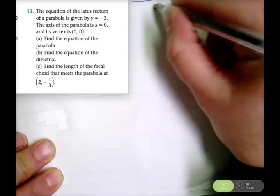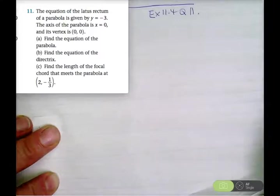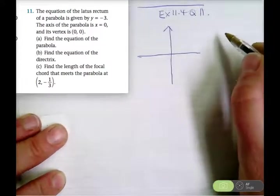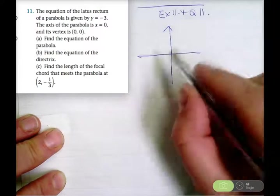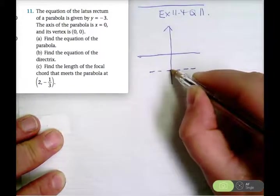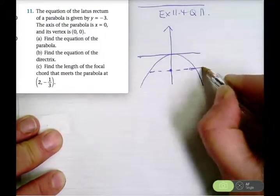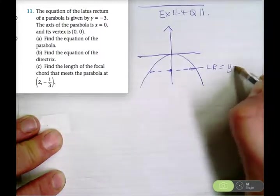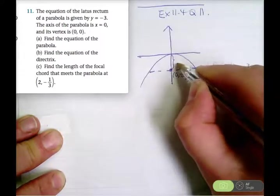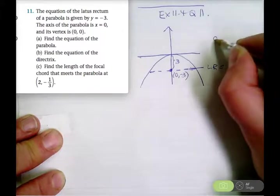Exercise 11.4, question 11, homework problem. People have asked for part C, but I'll need to quickly do parts A and B first. We're told that the equation of the latus rectum is y equals negative 3. That's not the directrix — it's the latus rectum. Remember the latus rectum passes through the focus, so the focus is (0, negative 3), which means the focal length is 3 units, so a equals 3.